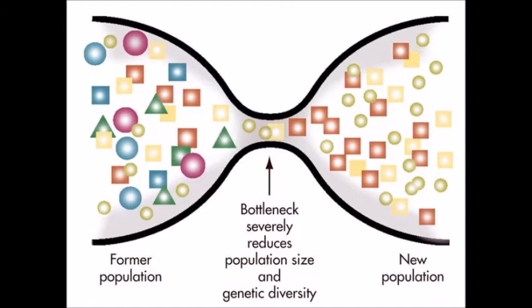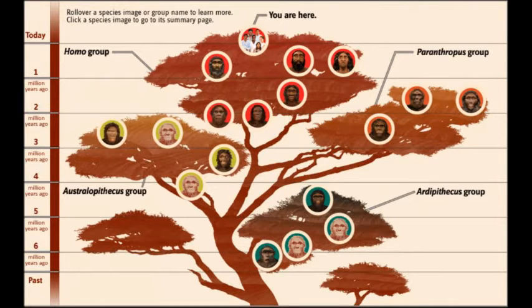These facts alone already disprove any attempt at science based on a Genesis creation, but there are even more problems with barominology. Looking at the quote from Answers in Genesis again, it says that it attempts to classify organisms even if they look differently today than they did when they were created. If they plan on doing that, then they must have some method for doing so — what is that method?